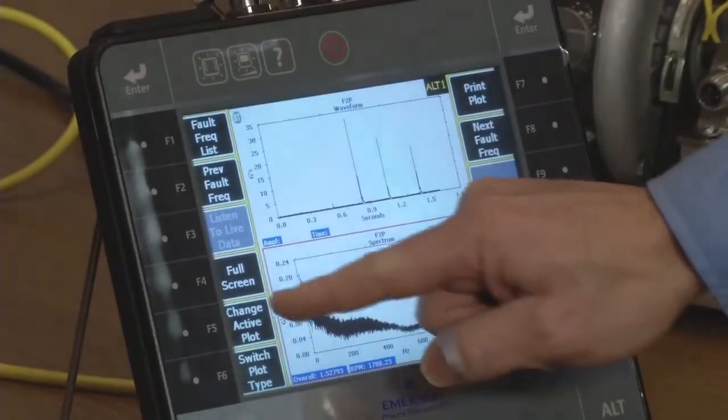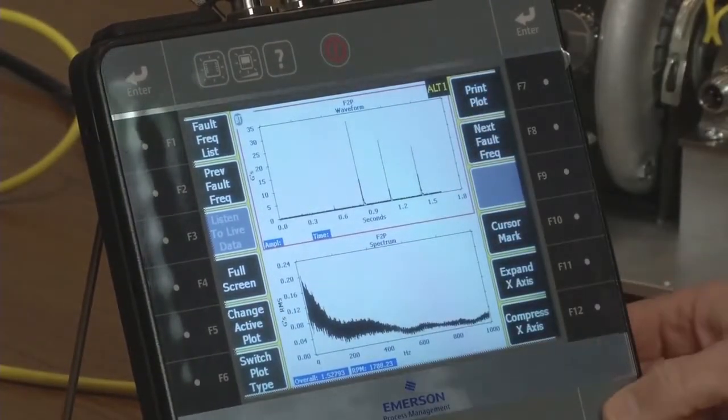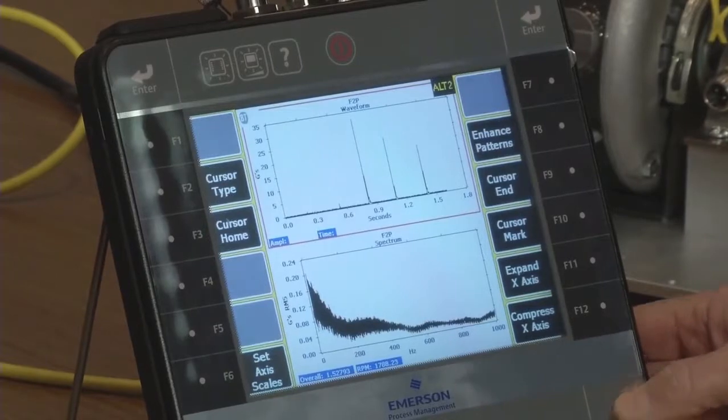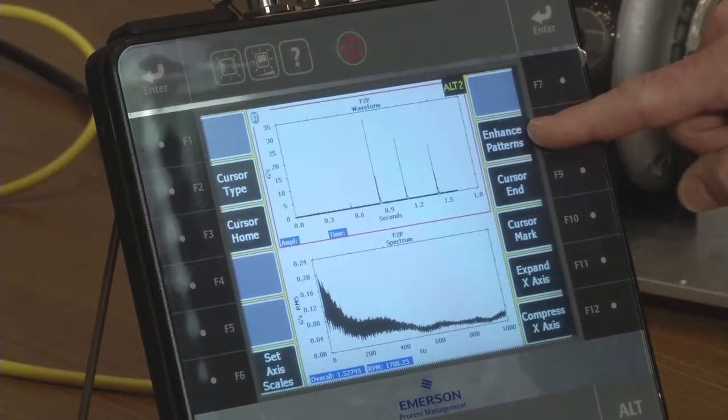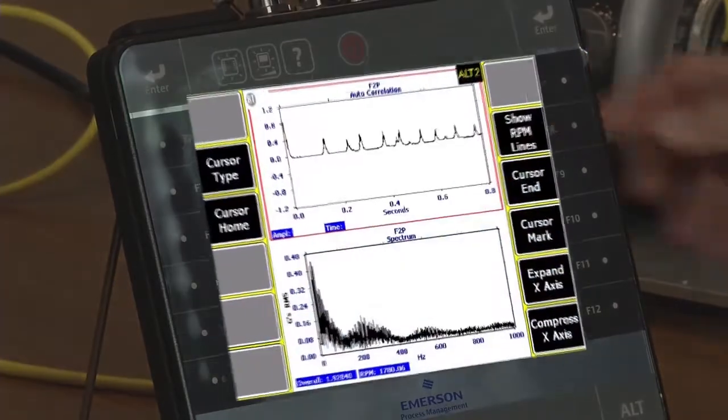So I need to change my active plot to waveform, tap on my alt button to where I see a button called enhance patterns, and click enhance patterns.